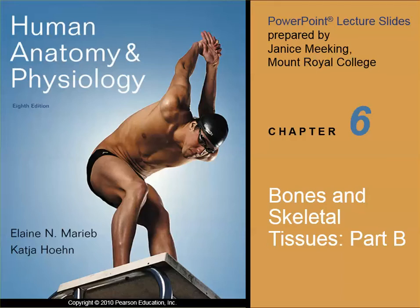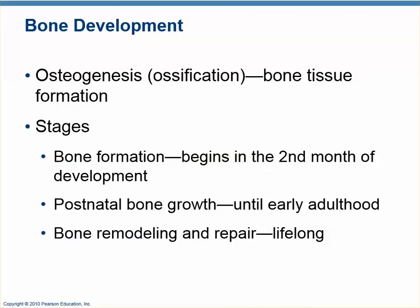This is chapter 6 part B, a continuation of bone tissue. We're going to start talking about bone development — where does bone come from? When you were a fetus or embryo, you didn't have any bones. Bones started to form in the fetal stage before you're born, but they don't fully form. They're always remodeling and changing, growing until early adulthood. A lot can go wrong during this process, and there are many pathologies involved with problems of osteogenesis and ossification.